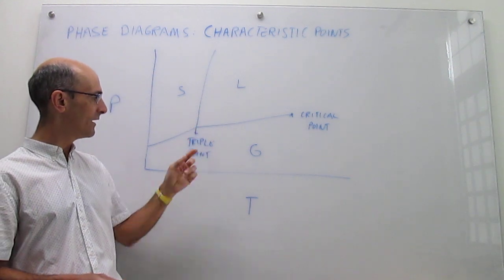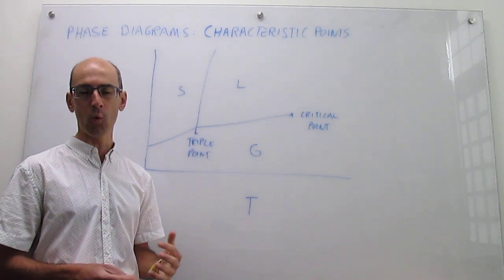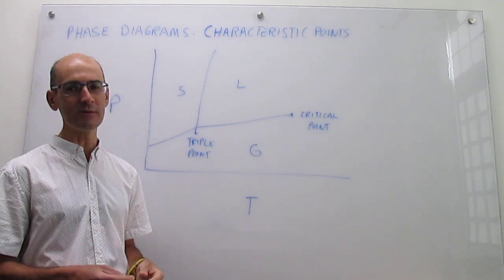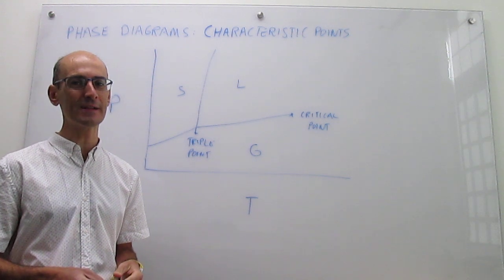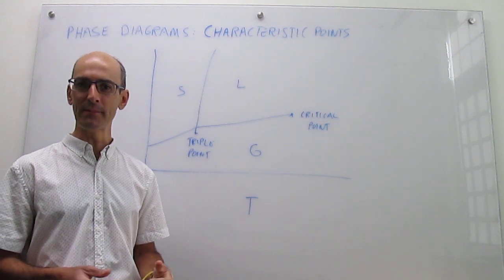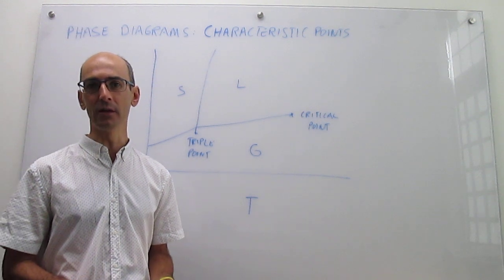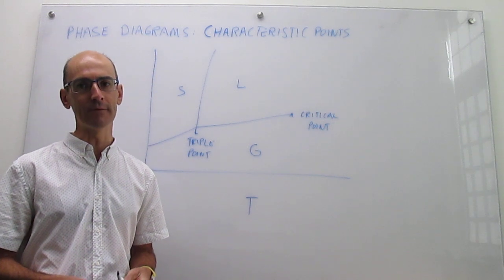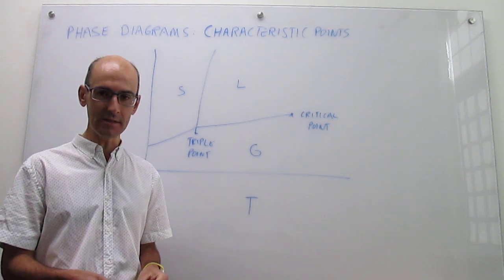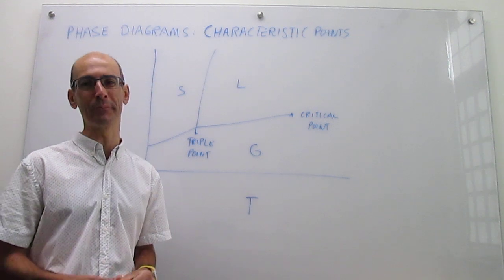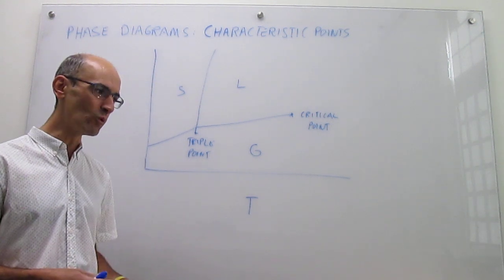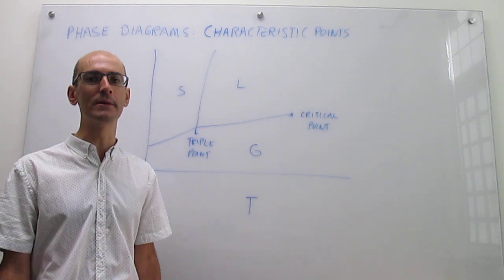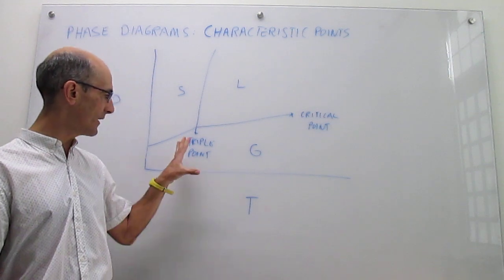For example, for water, that triple point is at a quite low pressure of about 6 milli-atmospheres, and the temperature of that triple point is actually really close to the freezing point, at about 273.16 Kelvin. For a different substance like CO2, that triple point occurs at a pressure of about 5 atmospheres and a much lower temperature of 217 Kelvin. But again, that's something that depends on the substance. So that is the triple point.